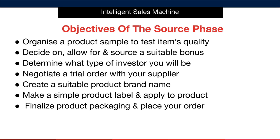In other words, you look at the capital you have at your disposal and ascertain how much of that you want to invest. Once you know how much of your capital you're prepared to put into play, I'll then show you how to negotiate a trial order with your supplier. Then I'll show you how to create our brands as well as teach you how to make a simple product label and how to apply that label to the product. I'll finish off this module by finalising your product packaging before we move into the final step of actually placing your order in the next module.